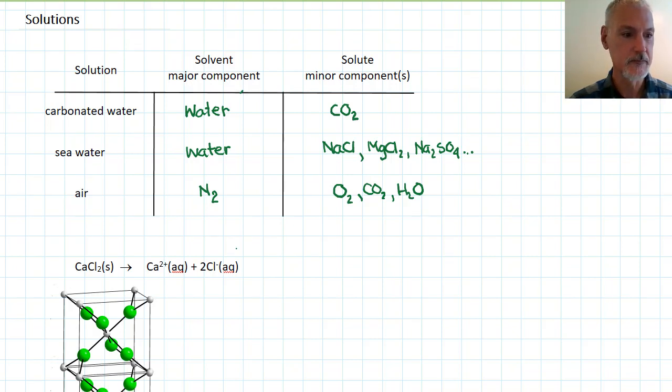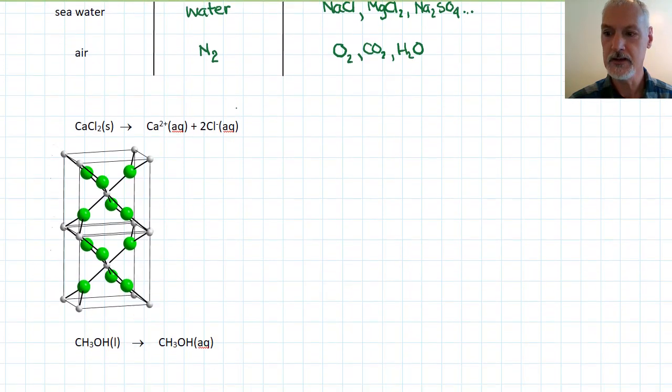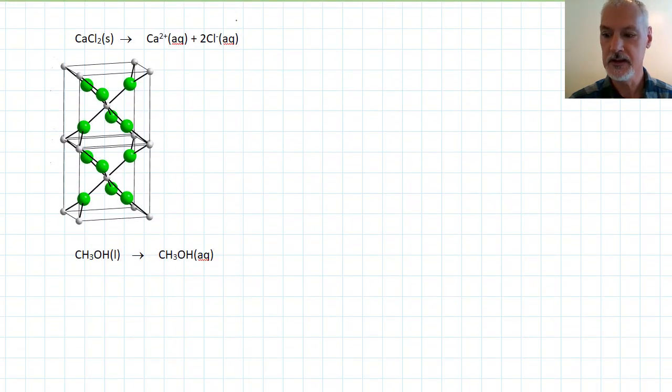I want to take a look at water dissolving a couple of different compounds. Let's begin by looking at what happens when we take water and mix it with an ionic compound. This material, calcium chloride, is an ionic substance. I can recognize it because it's got a metal and a nonmetal part to it.